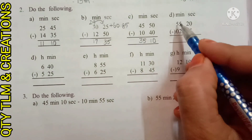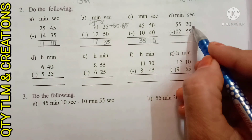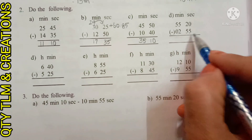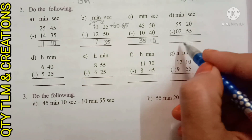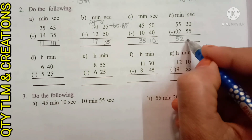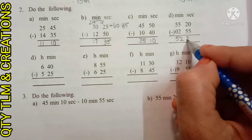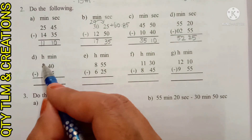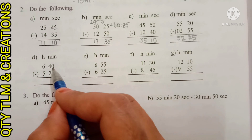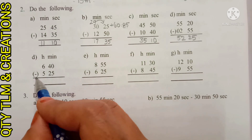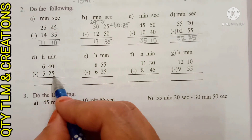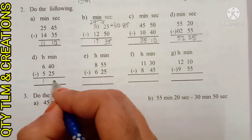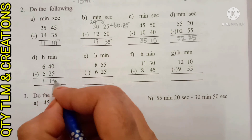D) 55 minutes 20 seconds minus 2 minutes 55 seconds. We will get 52 minutes 25 seconds. Next, E) 6 hours 40 minutes minus 5 hours 25 minutes. We will get 1 hour 15 minutes.